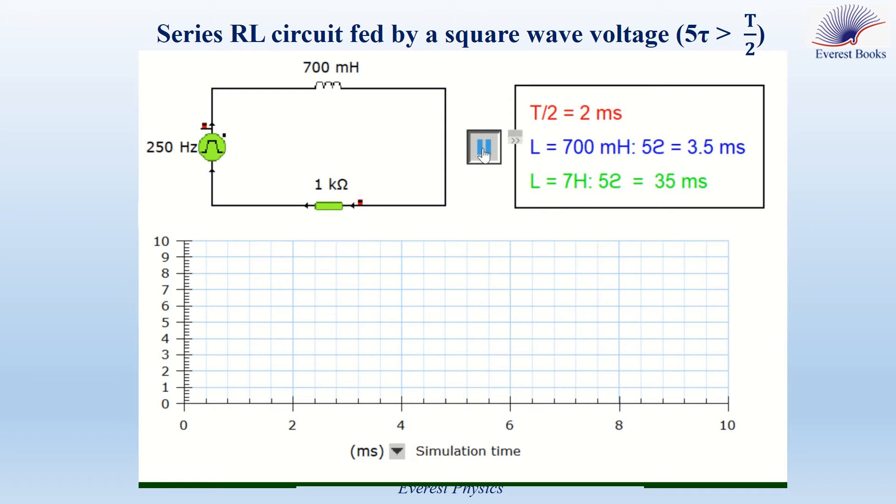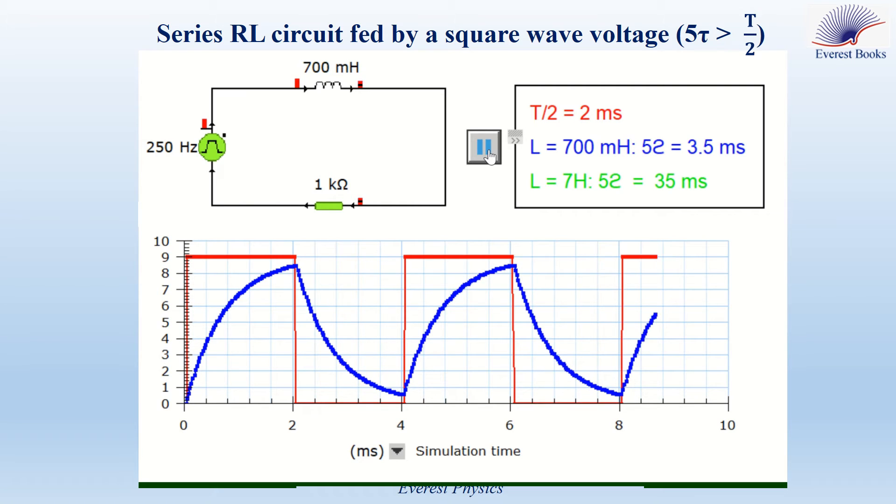Now let's start the simulation. The red curve represents UG as a function of time, while the blue curve represents the voltage across R as a function of time.